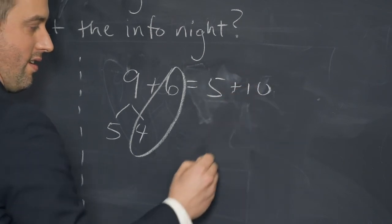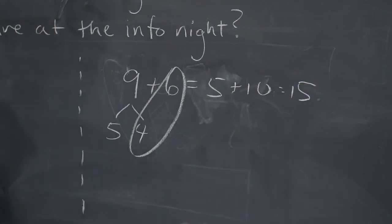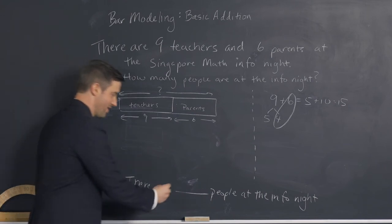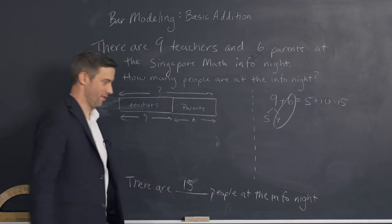So then I have five plus ten, which equals fifteen. There are fifteen people at the info night.